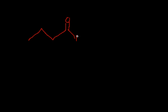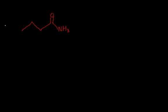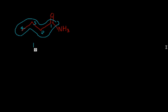This one here is pretty easy to name. All we do is look at how many carbons we have in our chain, which is one, two, three, four carbons. Therefore, if this were just a carbon chain, it would be called butane, but now we take away the E and put butanamide. So this is going to be butanamide.